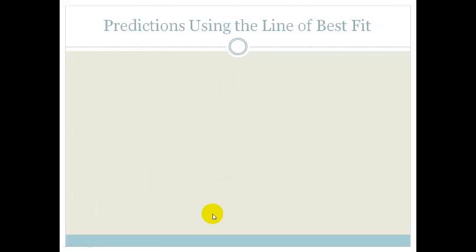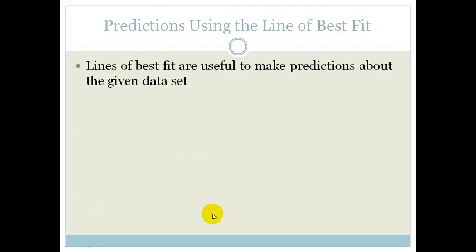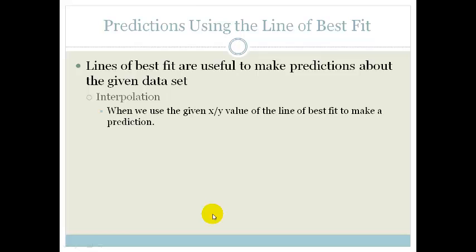Now what this means, the predictions using the line of best fit. The line of best fit is useful to make predictions about the given data set. There are lots of things we can do. The first is interpolation. Interpolation is when we use the given x or y value on the line that's already there to make a prediction. In other words, we don't extend the line, we just read off the line. That is interpolation.